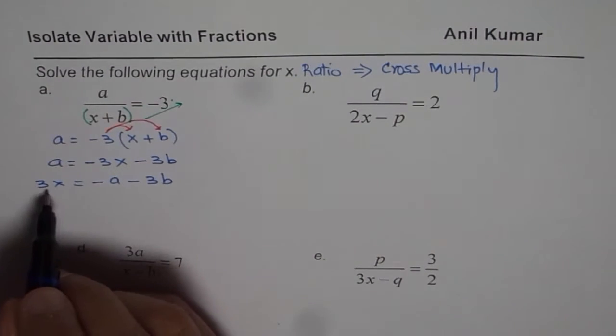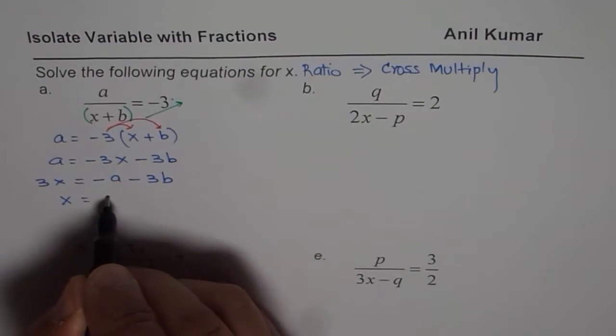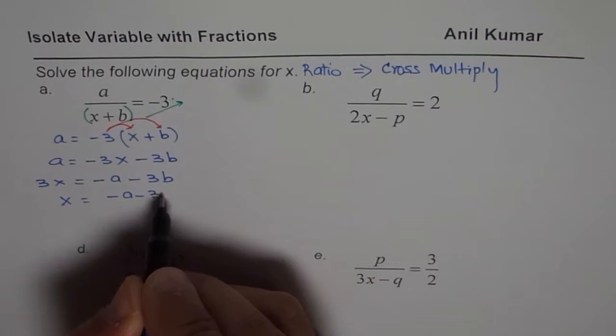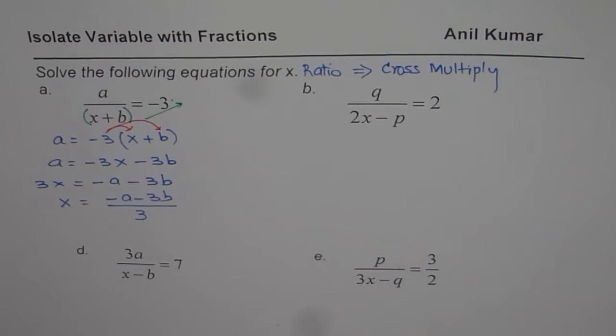To find x, we can divide by 3 both sides. So we get x equals minus a minus 3b divided by 3. So that is one way to solve this particular question.